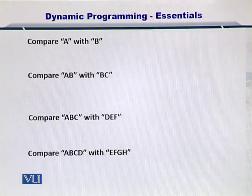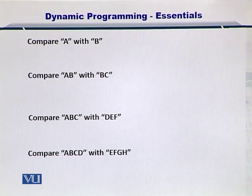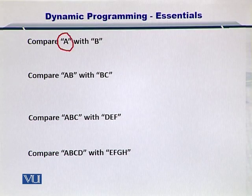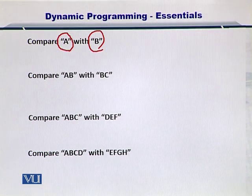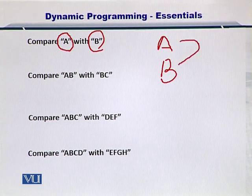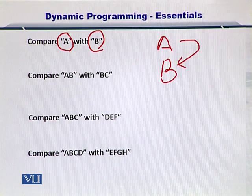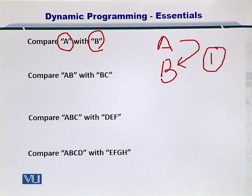As an example, let's compare A with B. So let's assume that we are trying to compare two strings. In this case, A and B, so how many comparisons do you need to make to compare these two strings? Obviously, you only need to make one comparison. That is, if A is equal to B or not. In this case, A is not equal to B, so your one comparison can help you decide the alignment between these two strings.